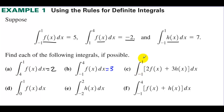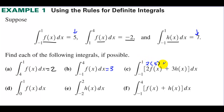Integrating from negative 1 to 1 of 2f(x) plus 3h(x). We know f(x) from negative 1 to 1 is 5, and h(x) is 7. We have 2 times 5 plus 3 times 7, which equals 10 plus 21, which is 31.